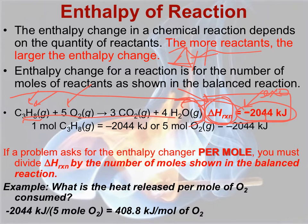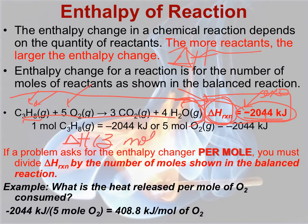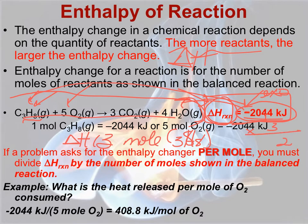What if you were asked what would be the enthalpy change for three moles of propane? You'd have to look at the particular equation and see that as it's written, it's for one mole. And so in this case, it would be 2,044 times three. So three moles of propane would release 6,132 kilojoules of heat.